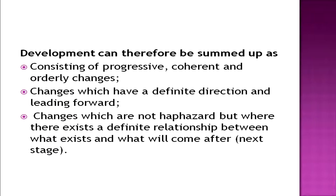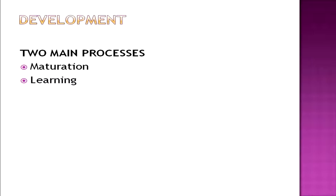Therefore, development can be summed up as consisting of progressive, coherent, and orderly changes — changes which have a definite direction and lead forward, and where there exists a definite relationship between what exists and what will come after. When talking about how development occurs, there are two main processes that lead to development: the first is known as maturation and the second is known as learning.